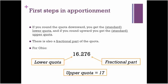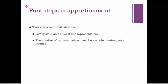We can take the quota of 16.276 and break it into a whole number plus a fractional part. The whole number — in this case 16 — is called the lower quota, because we've rounded down. If we rounded up, we'd get 17, which is called the upper quota. We can do this for every state to get a lower quota and an upper quota. For some states with very small populations, the lower quota will be zero and the upper quota will be one. We want to use these quotas and fractional parts to determine the apportionment, subject to two rules: every state gets at least one representative, and the number of representatives must be a whole number.